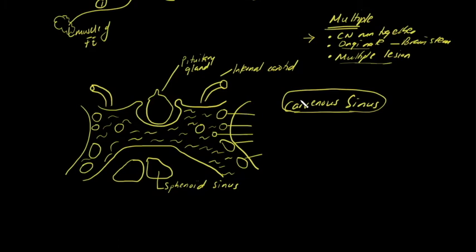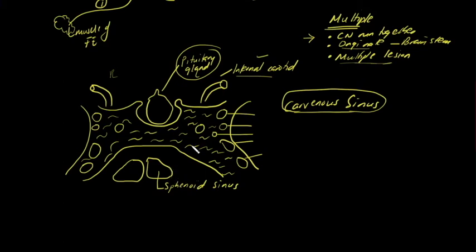The cavernous sinus is one of your venous dural sinuses, right in the middle — paired, one on each side of the pituitary gland. Running through or along the cavernous sinus are cranial nerves three (oculomotor), four (trochlear), six (abducens), V1 (the ophthalmic branch of the trigeminal), and V2 (the maxillary branch of the trigeminal).